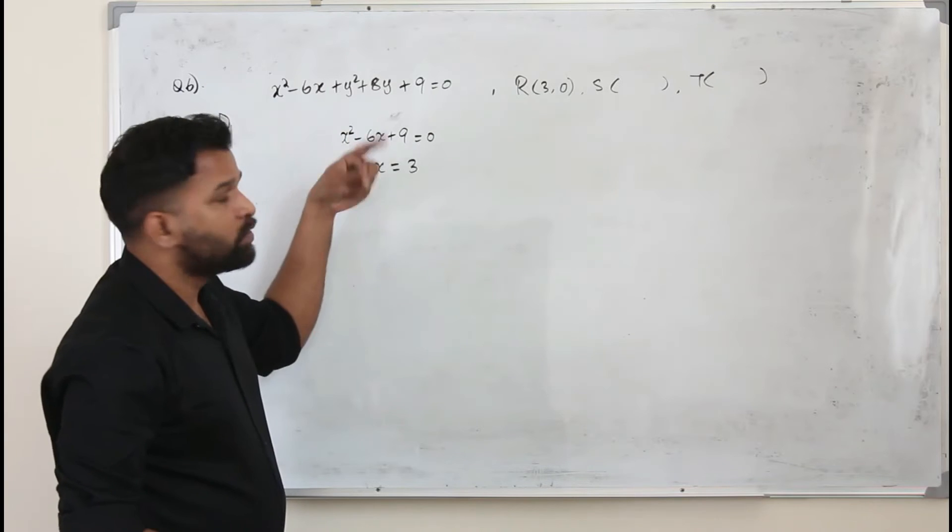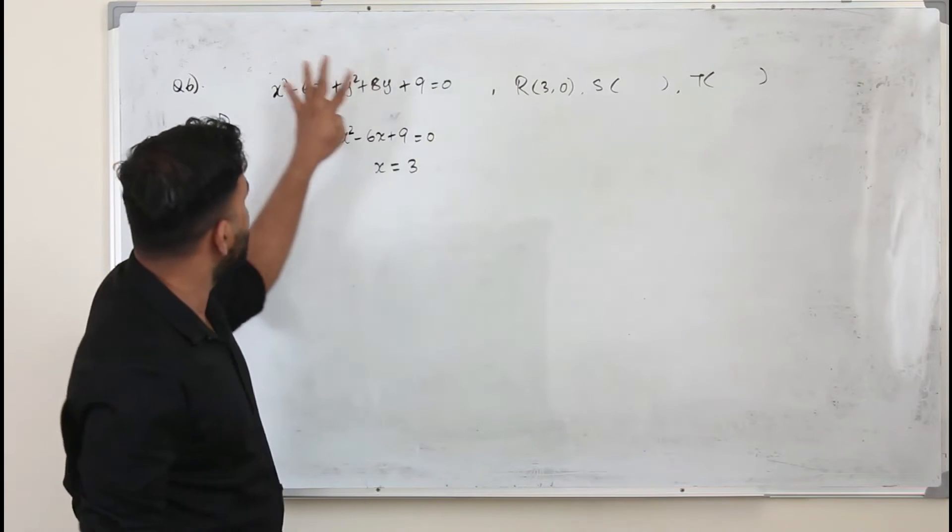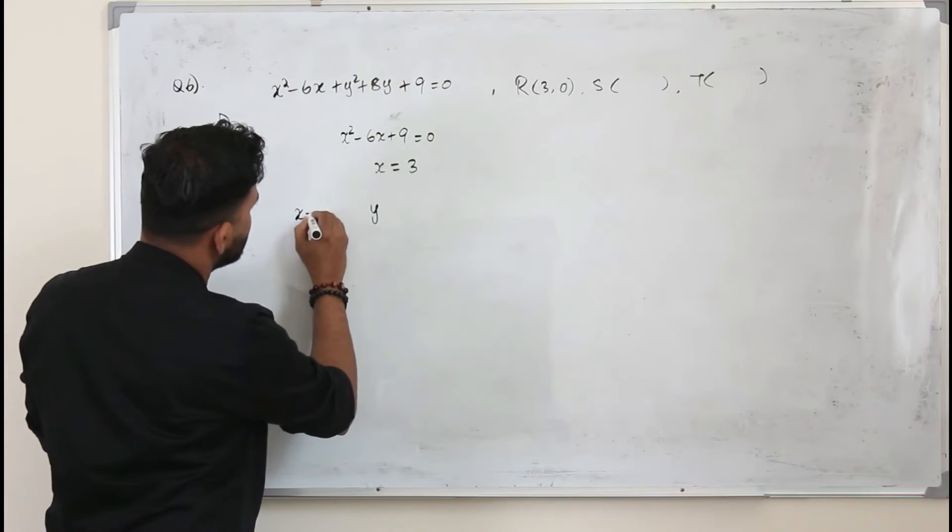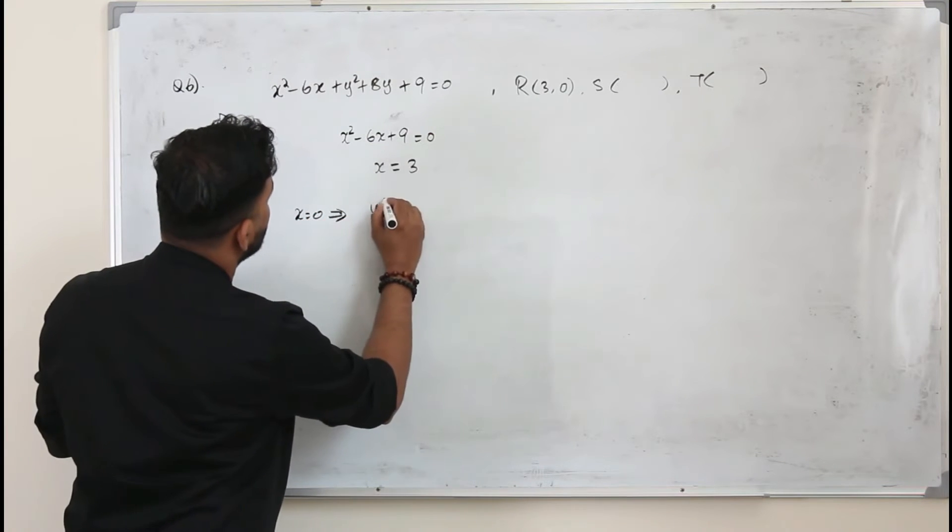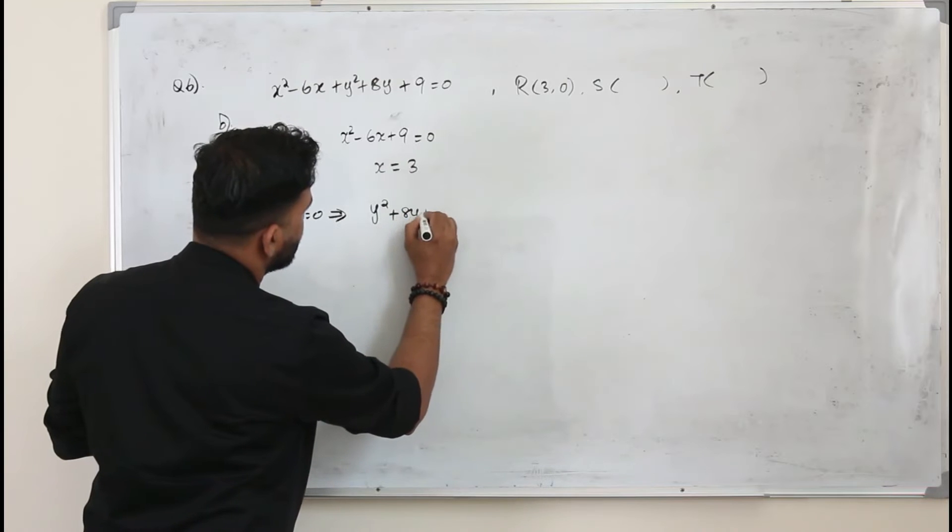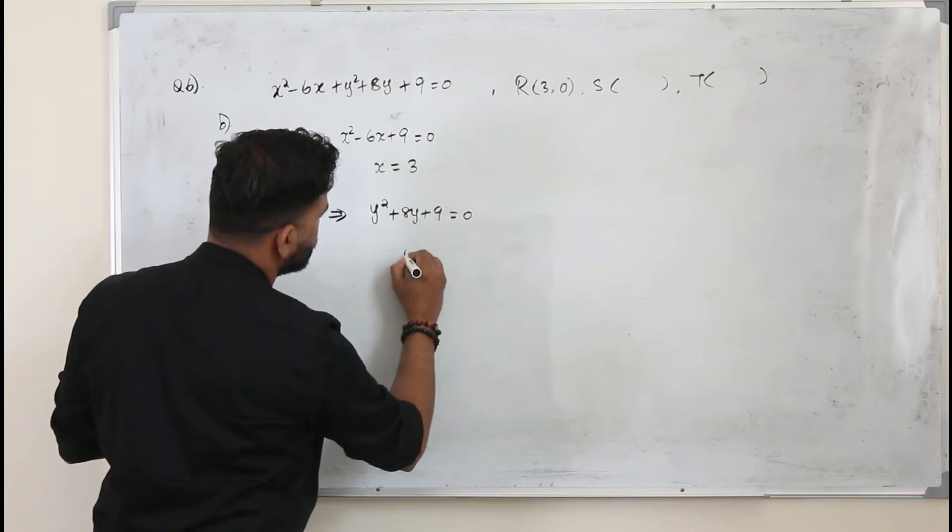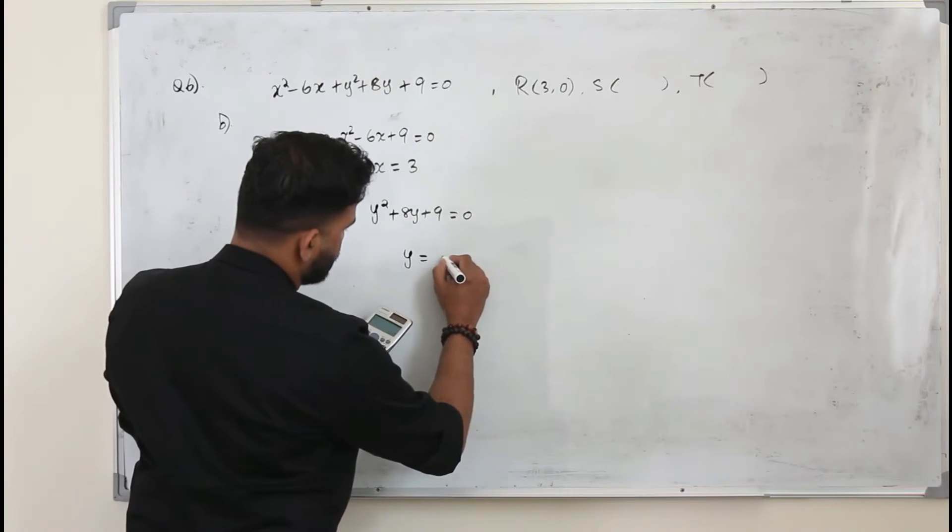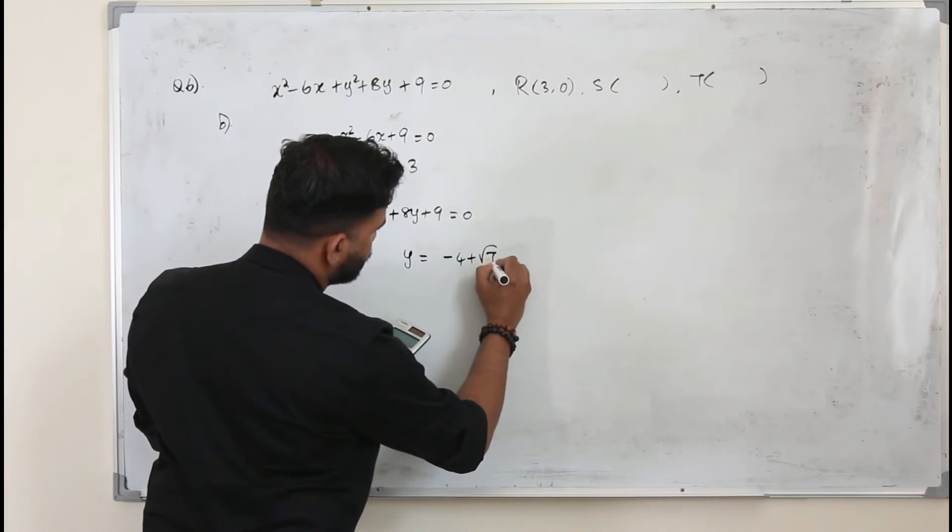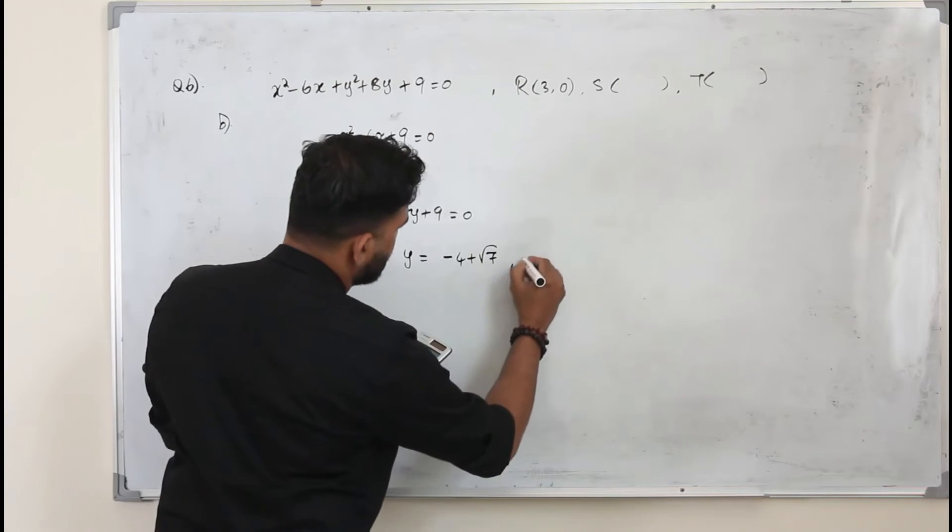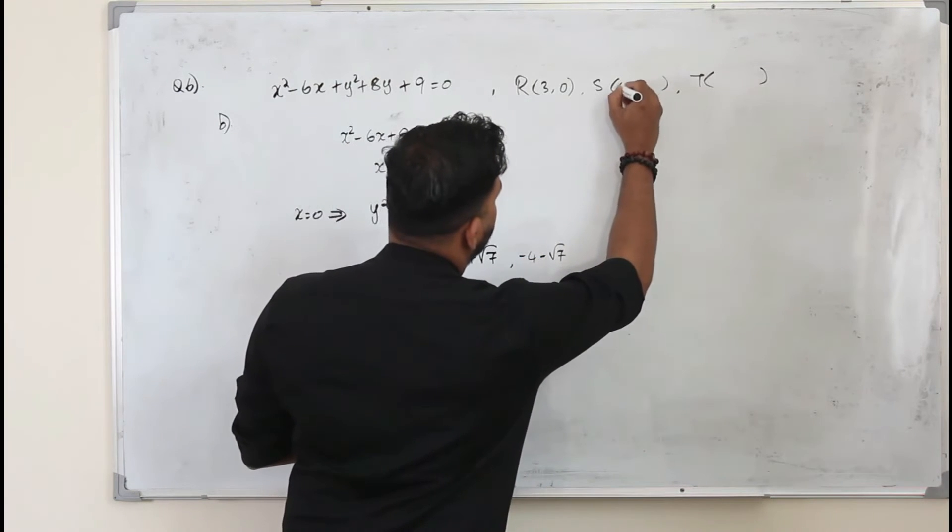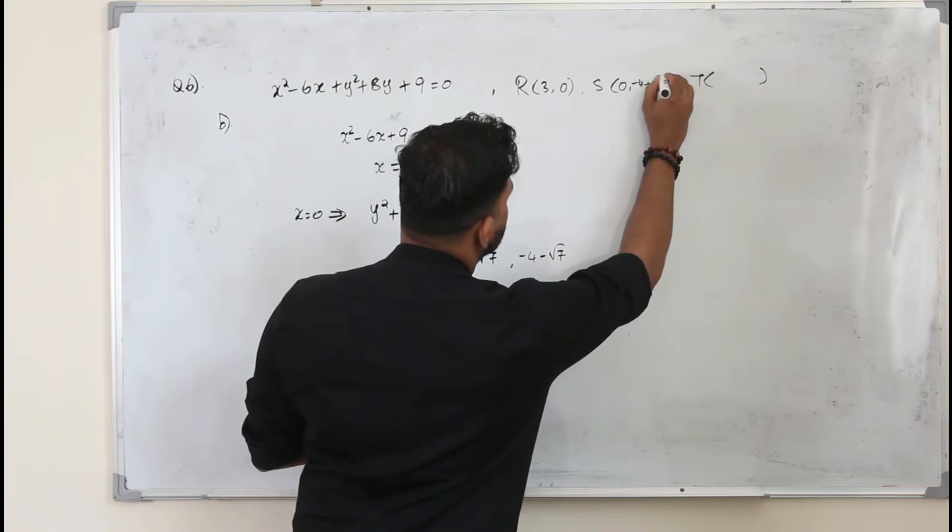Now when the line meets y-axis, replace x by 0. So when you put x equals 0, you get y squared plus 8y plus 9 equals 0. Solve this, you get two y values: y is minus 4 plus square root of 7, and minus 4 minus square root of 7.